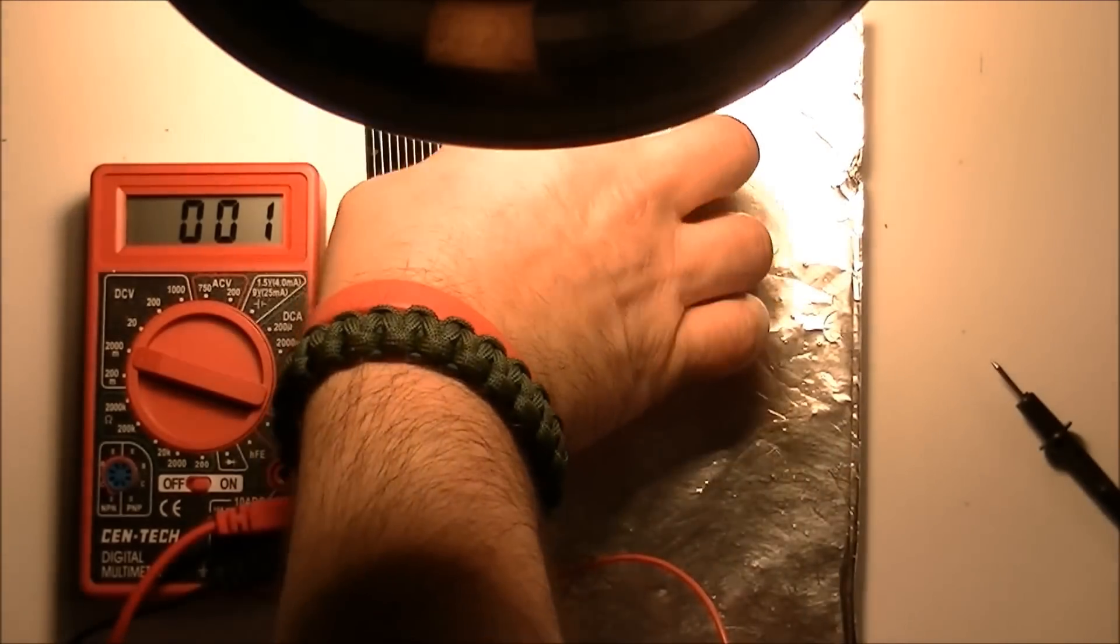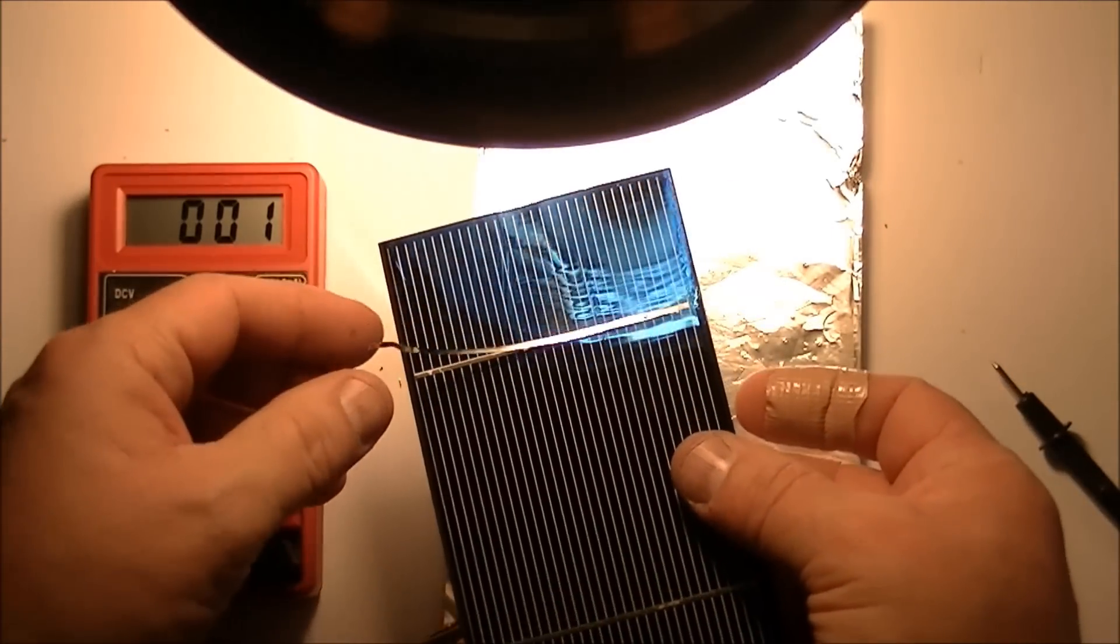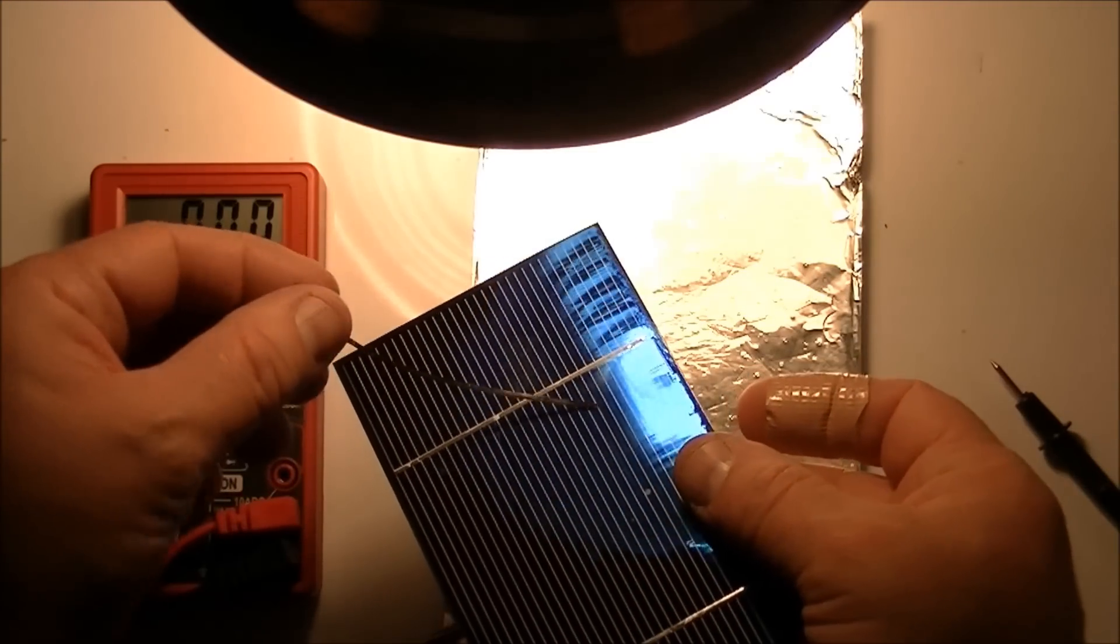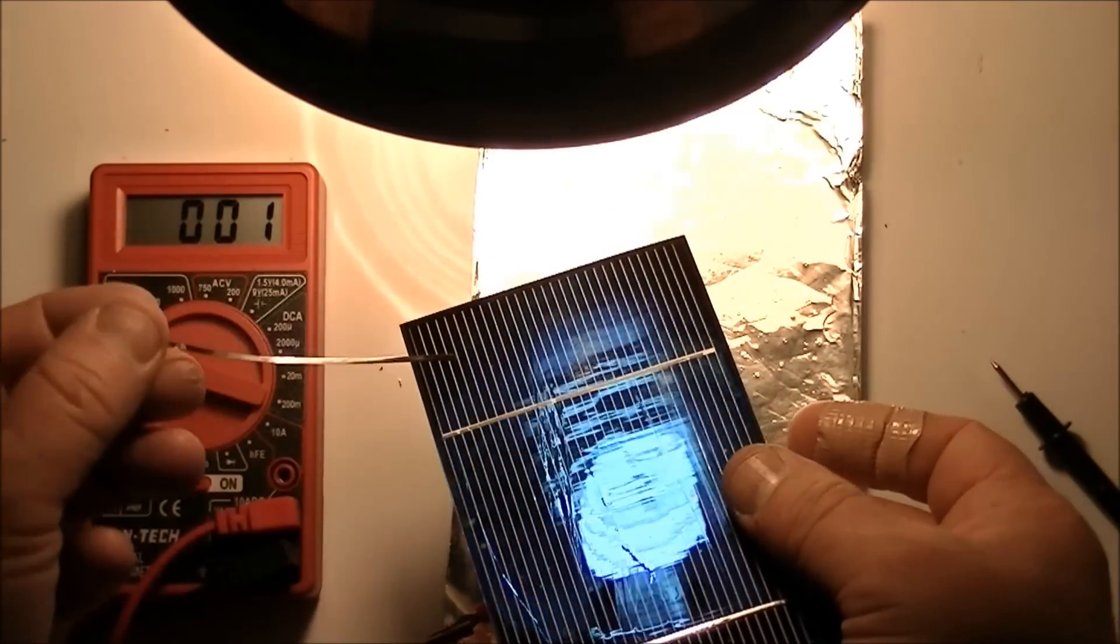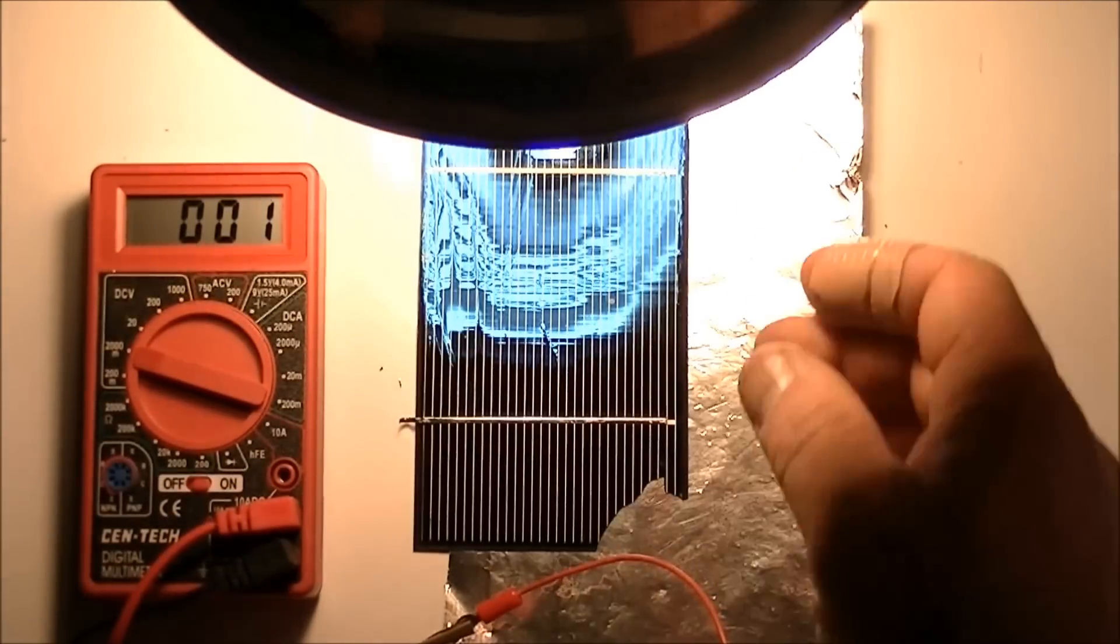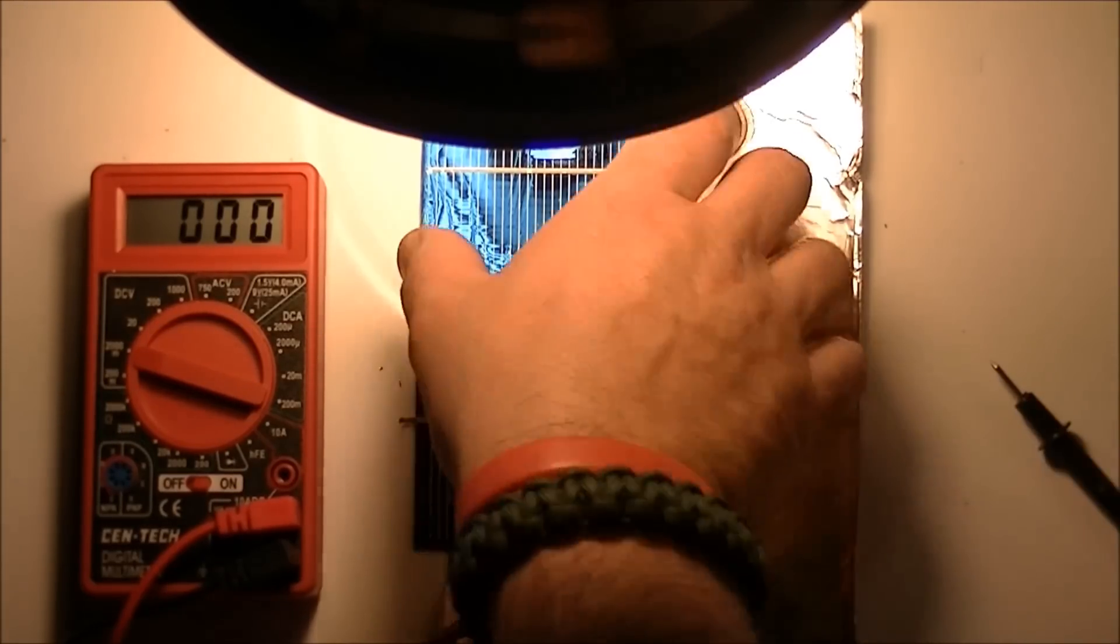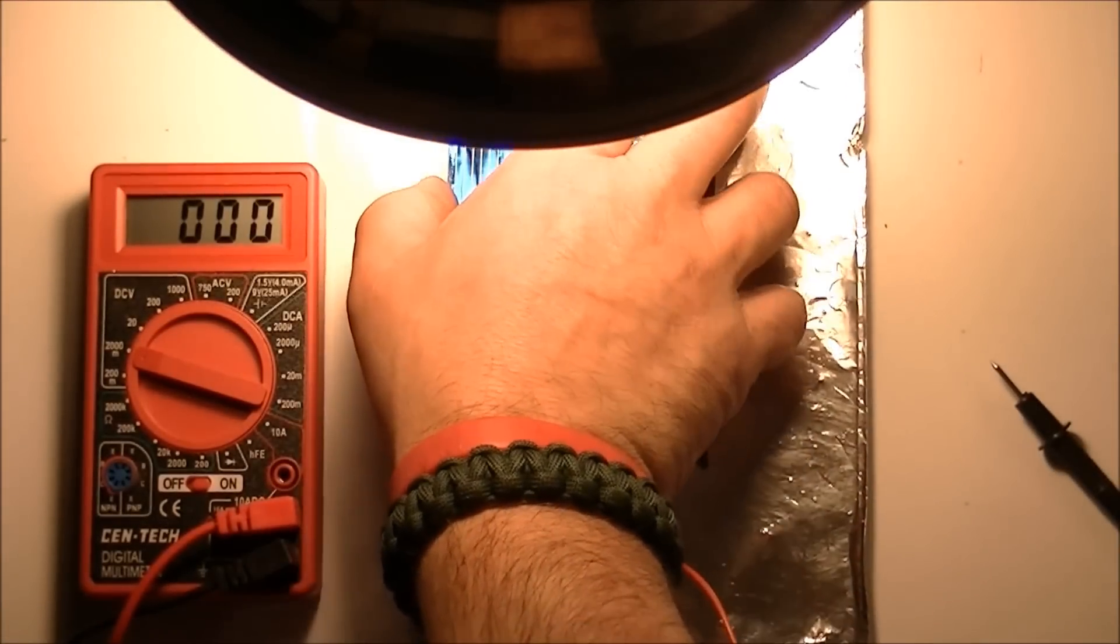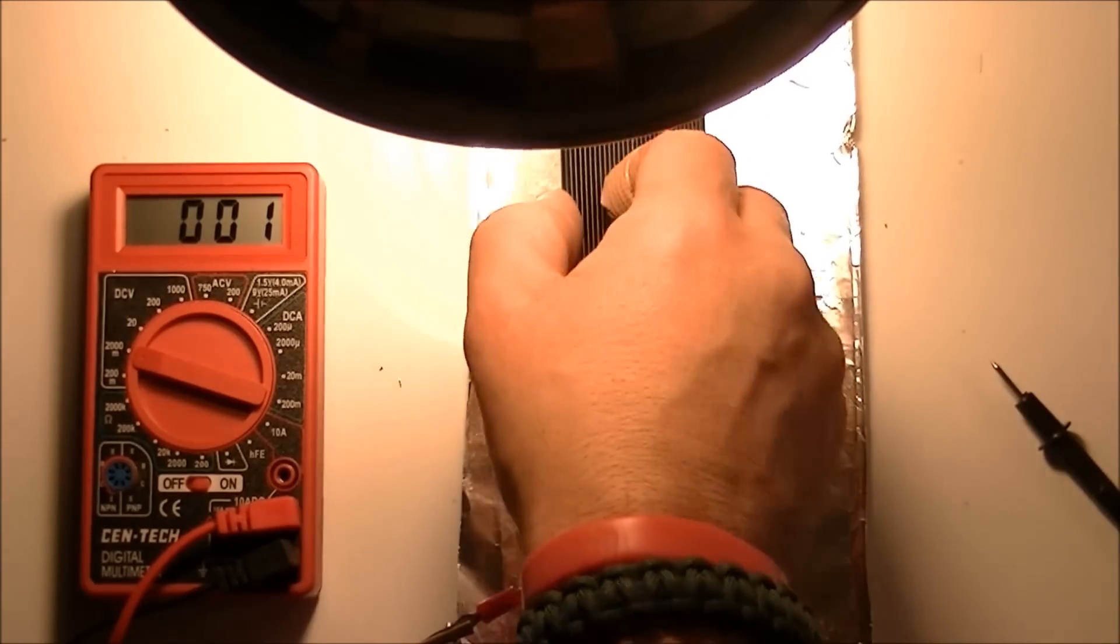The other thing you may want to check is to see how good the tabs are on it. On this one, as you can see, it just basically, there it goes, it just peels right off. So I would keep the tab and re-tab that. I'm not going to cover that in this video because there's a million videos showing you how to tab a solar cell. This is about testing them and checking how they function. So we know that cell is good.